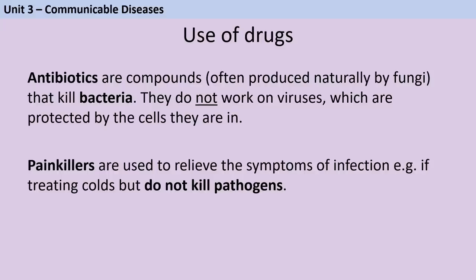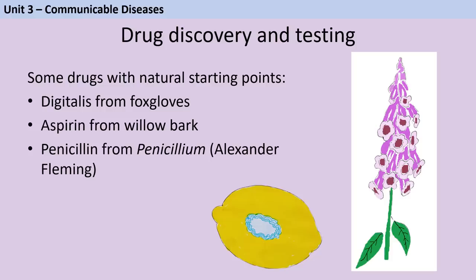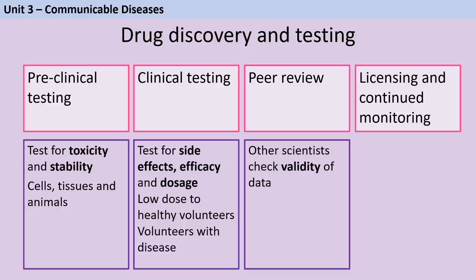You should be able to differentiate between antibiotics and painkillers: antibiotics can only treat bacterial infections and don't work on viruses; painkillers can relieve symptoms like fever but don't kill the pathogen. While most new drugs are synthesised by chemists, many have natural starting points — digitalis (a cardiac medicine) was originally isolated from foxgloves; aspirin was originally isolated from willow bark; and penicillin, the first antibiotic, came from the fungus Penicillium and was discovered by Alexander Fleming. Drug development is a very lengthy process — it's entirely normal for it to take 10 years or longer for a new drug to come to market, partly due to the number of stages involved and also difficulties receiving funding and recruiting volunteers.